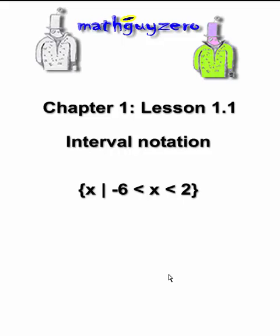So let's start with our set builder notation. What this literally says is the set of x being any number such that x has to be greater than negative 6 and it has to be less than 2.